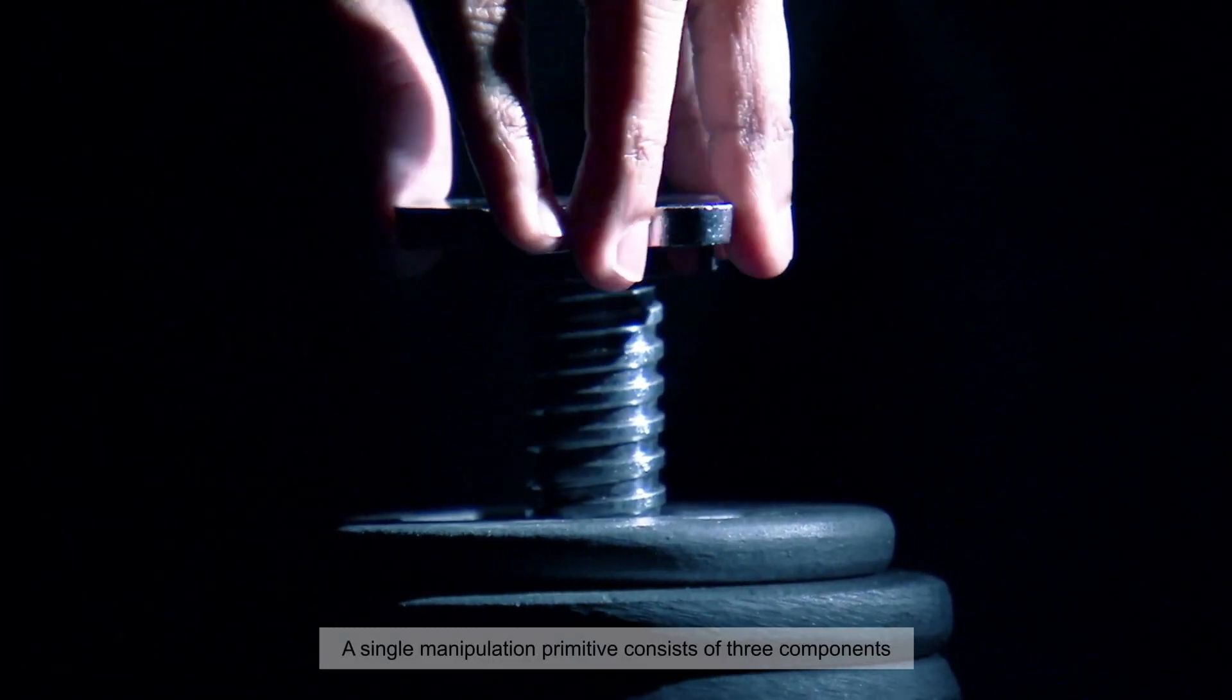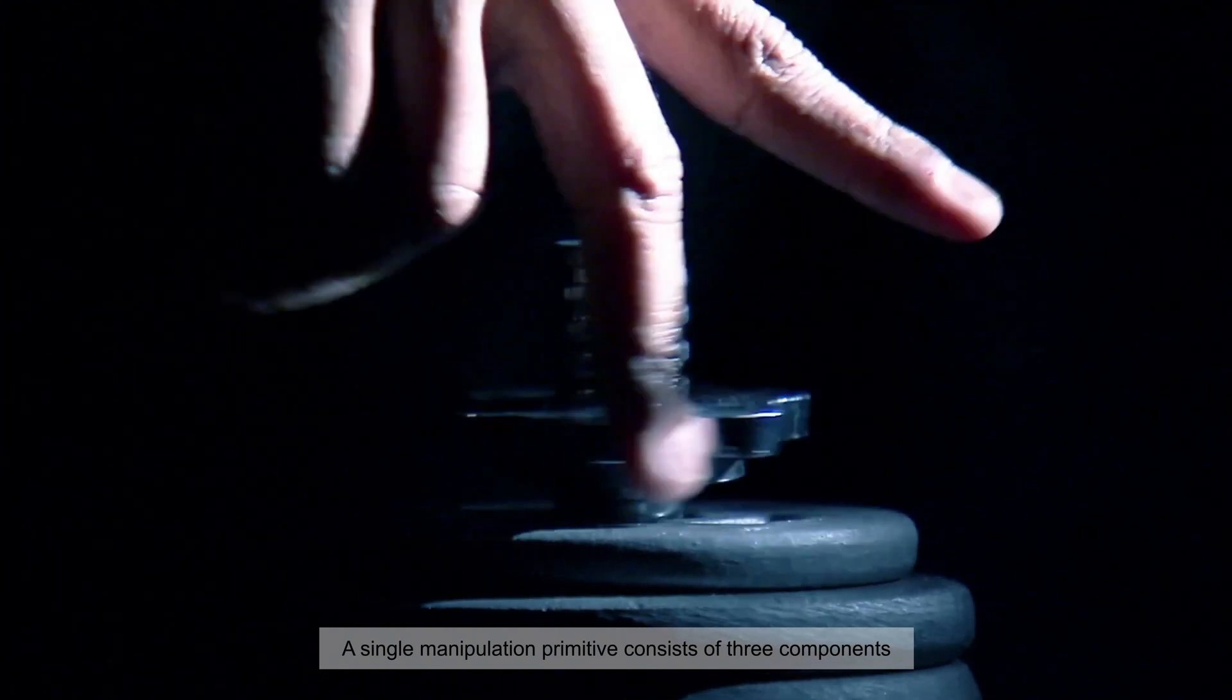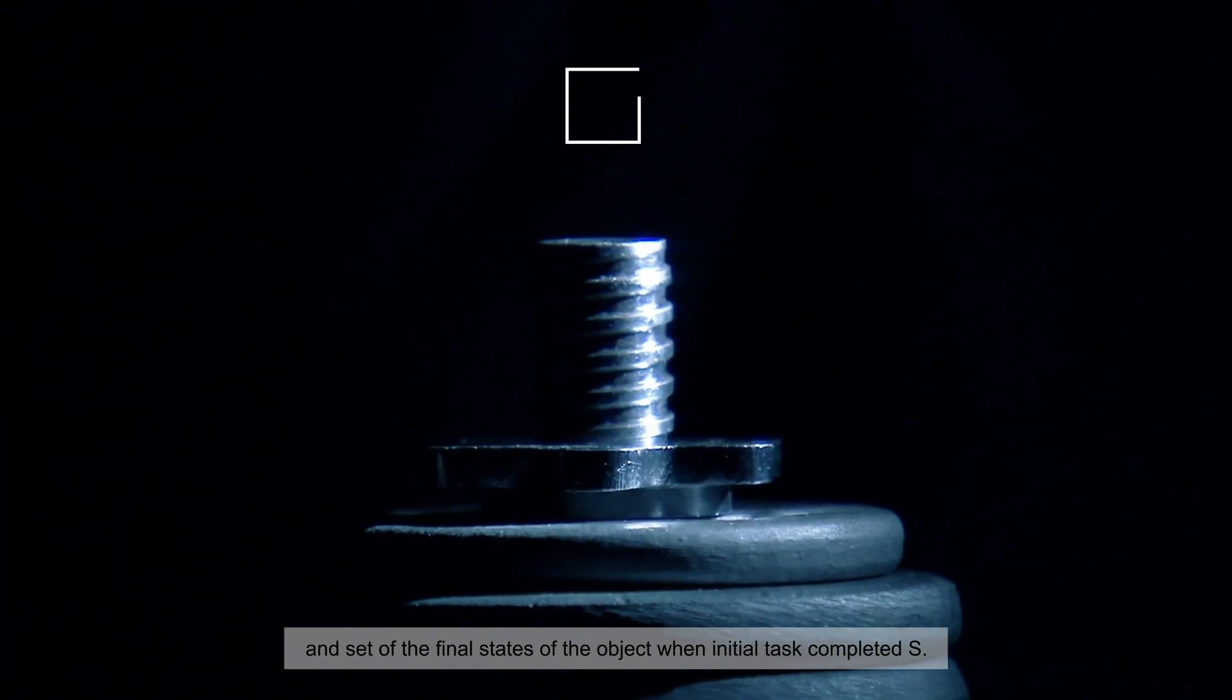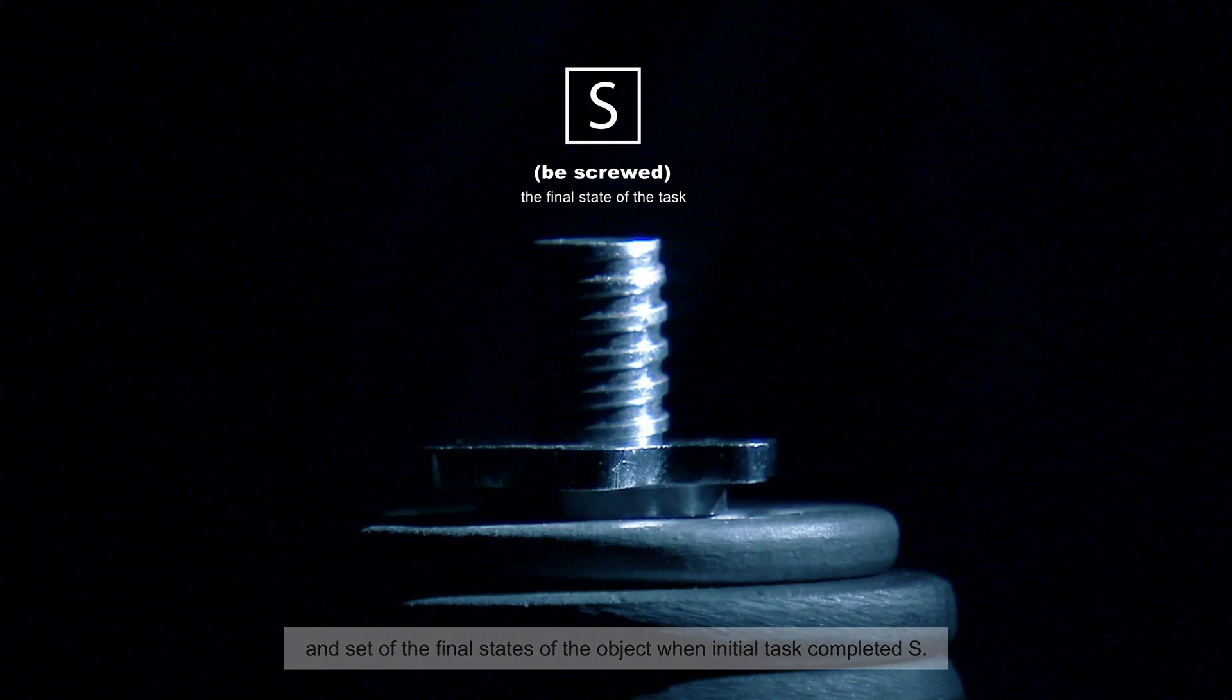A single manipulation primitive consists of three components: primitive type P, state of the manipulation object O, and set of the final states of the object when initial task completed, S.